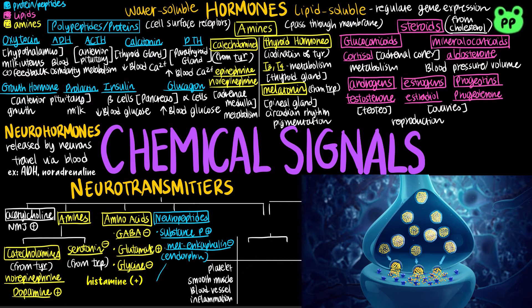Opiates bind to the same receptors as endorphins and can be used as painkillers. The last class of neurotransmitters are gases, which includes nitric oxide, which increases platelet aggregation, relaxes smooth muscle, causes vasodilation, and gives an anti-inflammatory effect under normal physiological conditions.